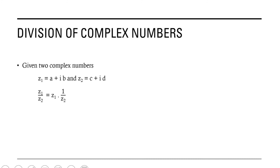The next topic is division of complex numbers. Given z1 equals a plus ib and z2 equals c plus id, z1 divided by z2 equals z1 into 1 by z2. We can either divide directly by finding the conjugate of z2 and multiplying and simplifying, or find the multiplicative inverse of z2 and multiply it with z1.